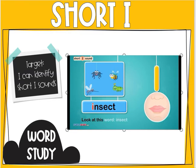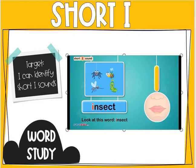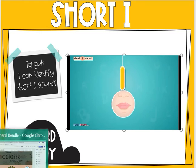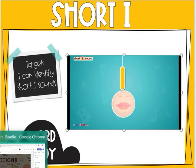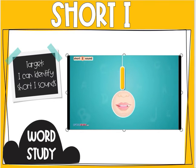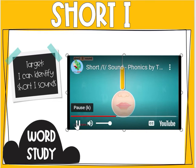Look at this word: insect. The letter I in insect makes the short ih sound. How to make the sound: open your mouth a little and push out a puff of air to make the ih sound, as in inn.